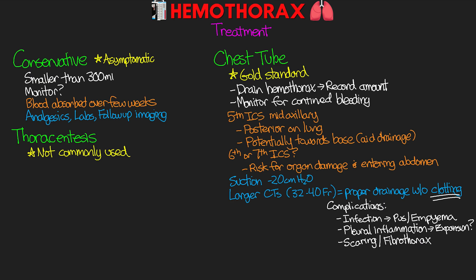If we do end up with a clotted hemothorax, we can treat it with intrapleural thrombolytic therapy or potentially surgery. A thrombolytic agent can be infused through the chest tube into the intrapleural space in an attempt to break up the clot.